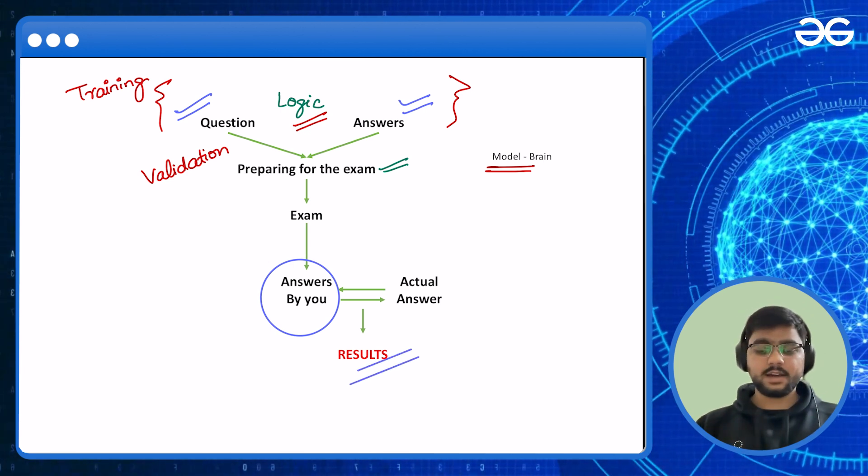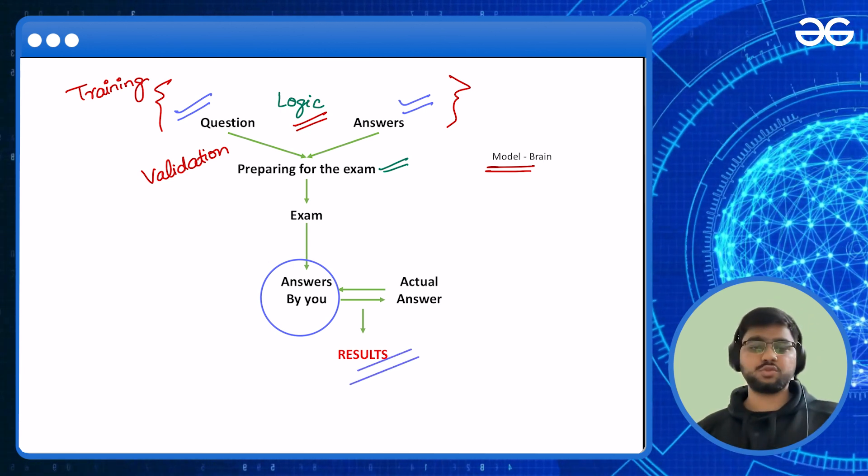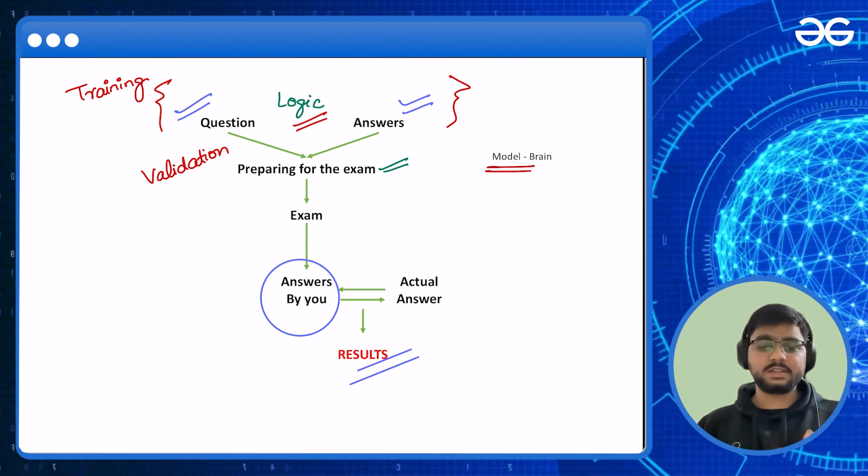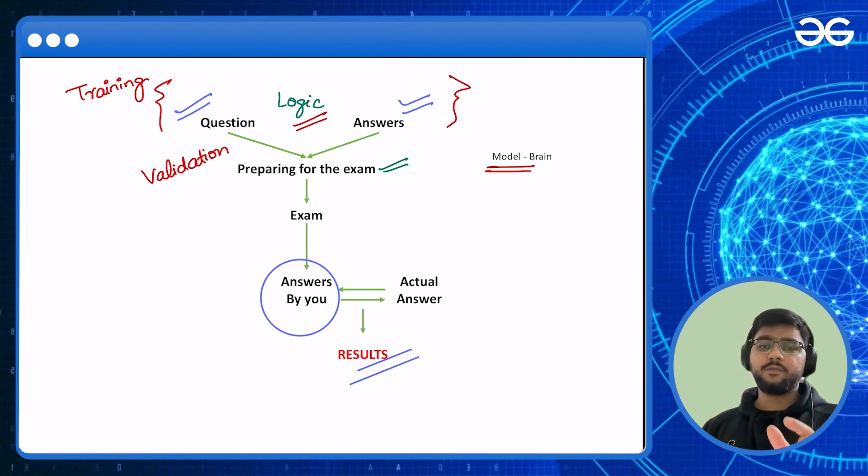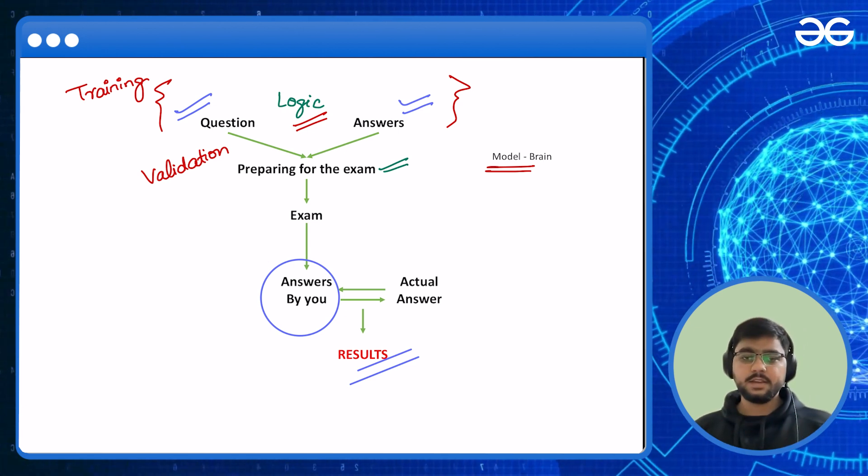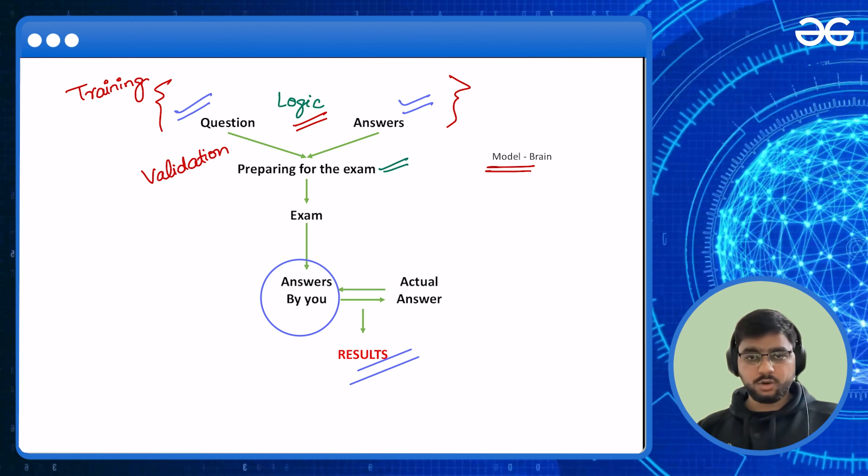And based on how much your answers matched with the actual answer key, you will get your results. If your results are very much accurate, like let's say you scored 95% and there were 100 questions, that means out of 100 you solved 95 questions correct and there were five questions which were wrong. So that's the accuracy of your model, that is the brain.